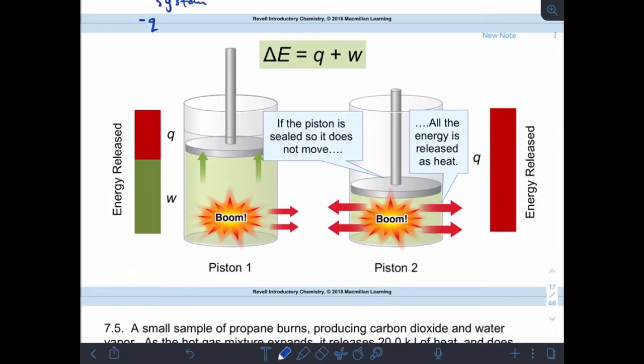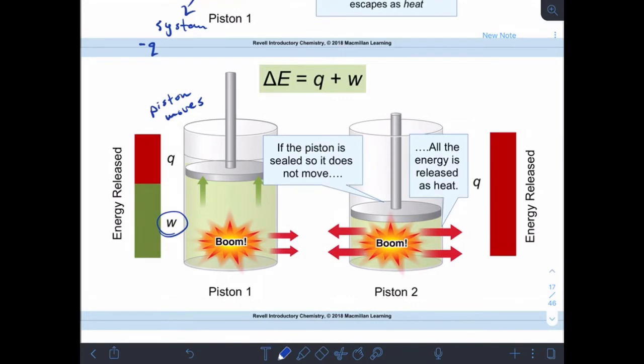Okay, so what this slide is showing us is with piston number one, the piston moves. Okay, so we have a W, something is moving, work is being done. In the second one, the piston does not move. Right, so if there's no movement, then work equals zero.